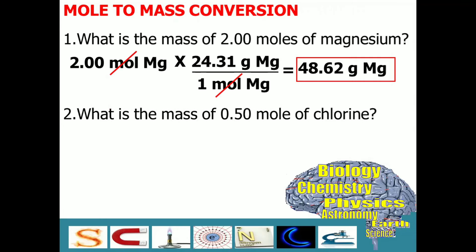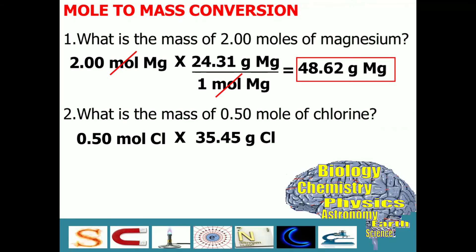How about problem number two: What is the mass of 0.50 mole of chlorine? Same process. You have to write down the given, which is 0.50 mole. Then, check the periodic table for the atomic mass of chlorine, and that is 35.45 grams divided by one mole of chlorine. Then, cancel out the mole and we will have the grams. And let us multiply 0.5 with 35.45.